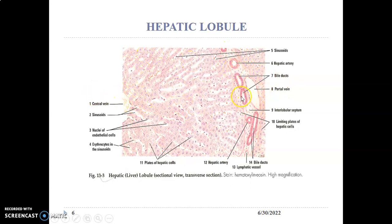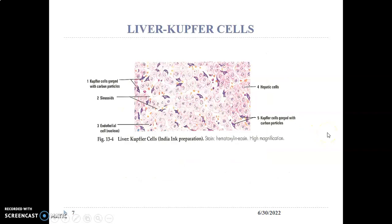At the corners of the lobule, you have connective tissue housing the portal triad: the portal vein, which is the largest; a branch of the hepatic artery with the thickest wall; and the bile duct with simple cuboidal epithelium. The liver also contains Kupffer cells, which are members of the monocytic phagocytic system and help with the immune role.